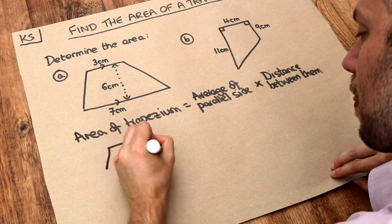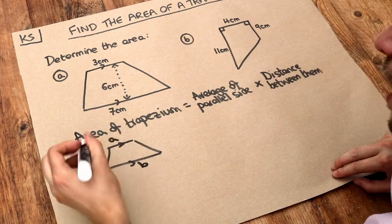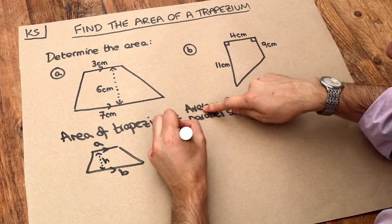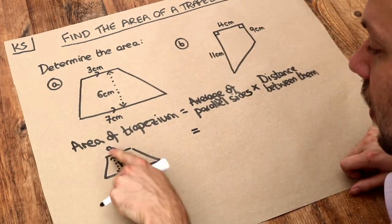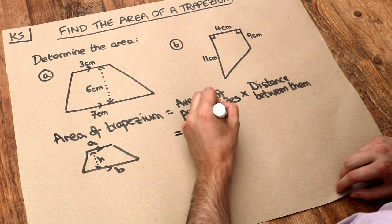If I was to draw a trapezium and our two parallel sides were a and b and we had a distance of h between them, then if we use this description here the average of the parallel sides, well these are parallel sides, to find the average of them you would add them together and divide by two that's how you find the average of two values.